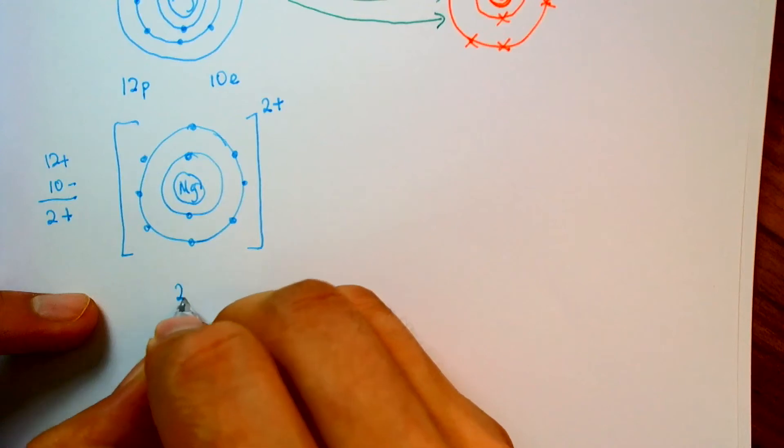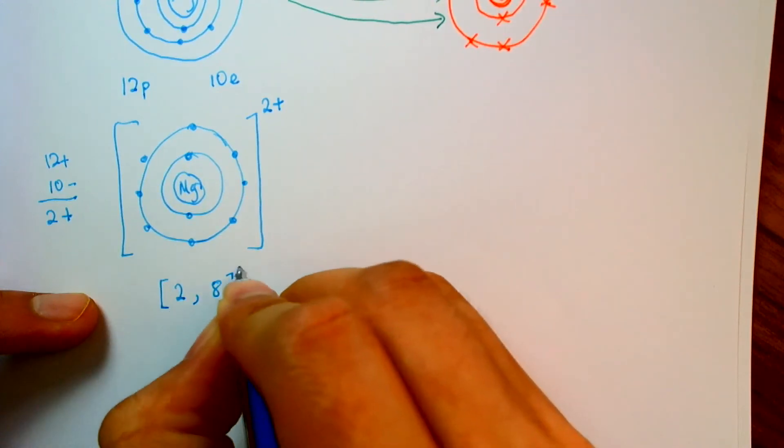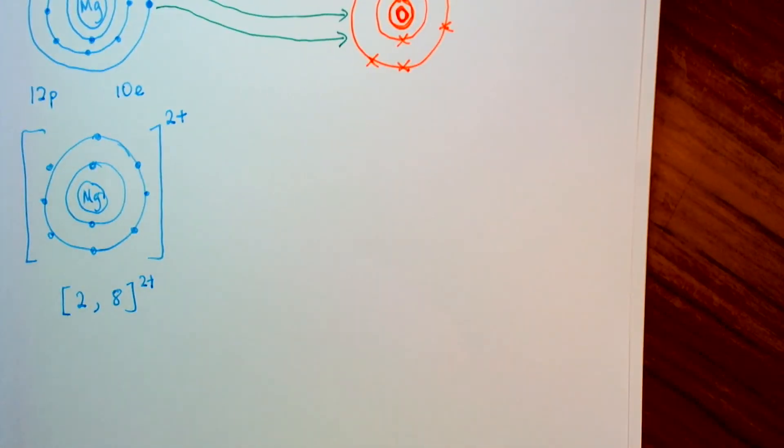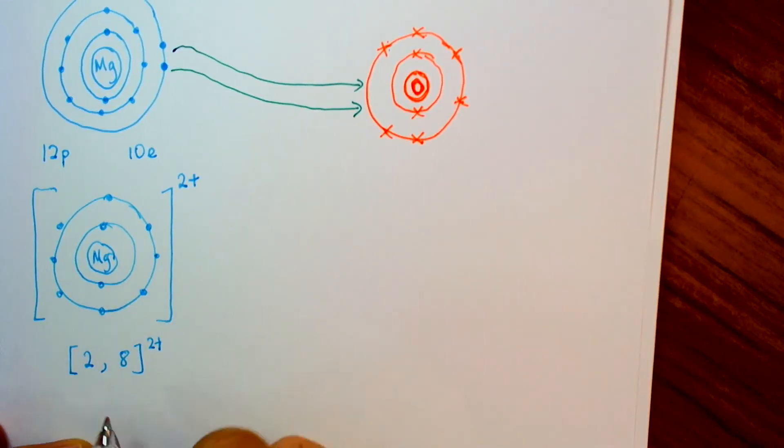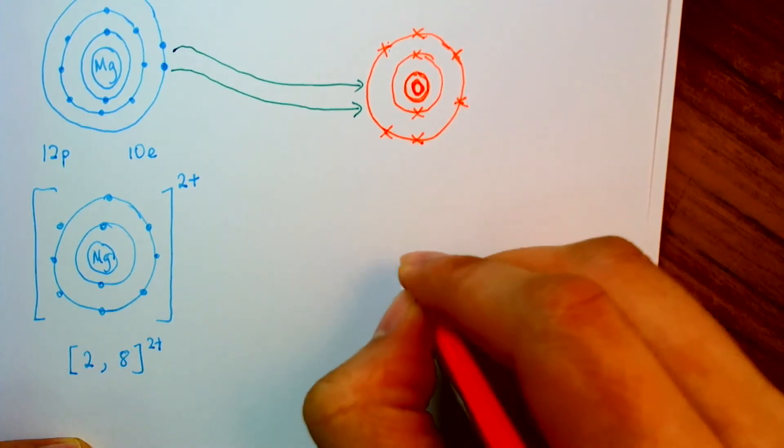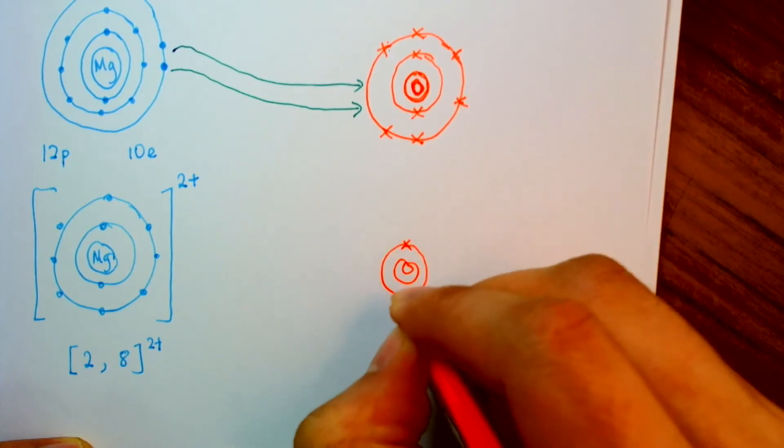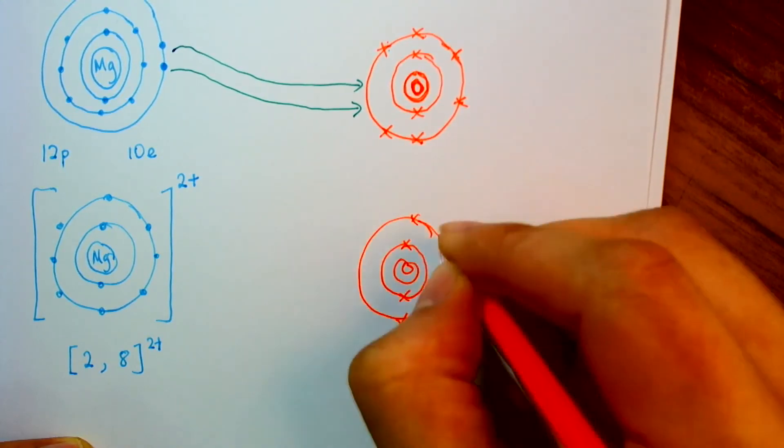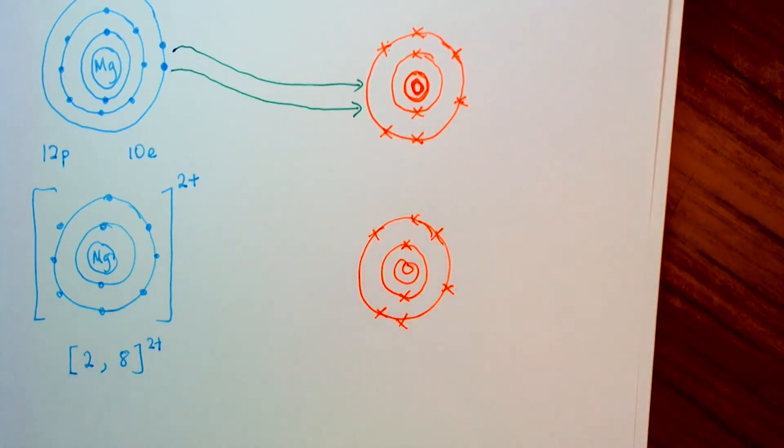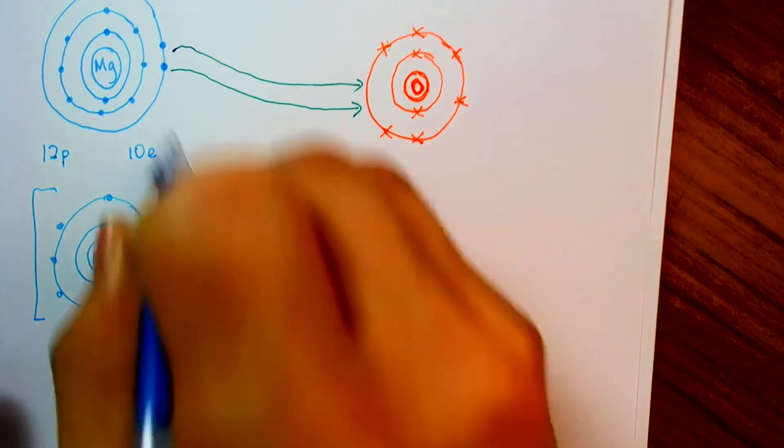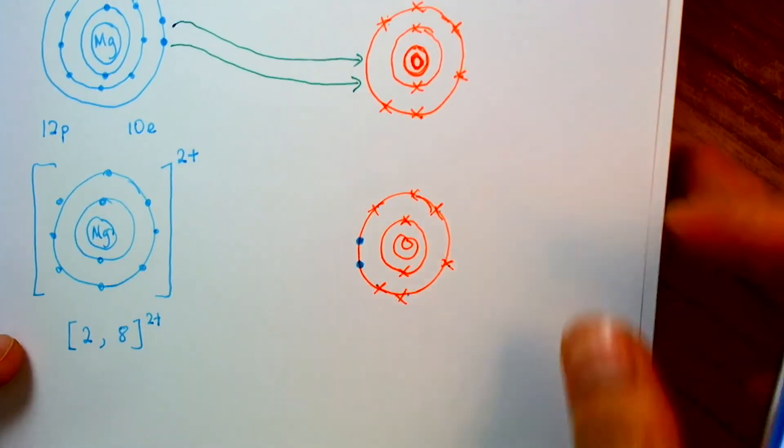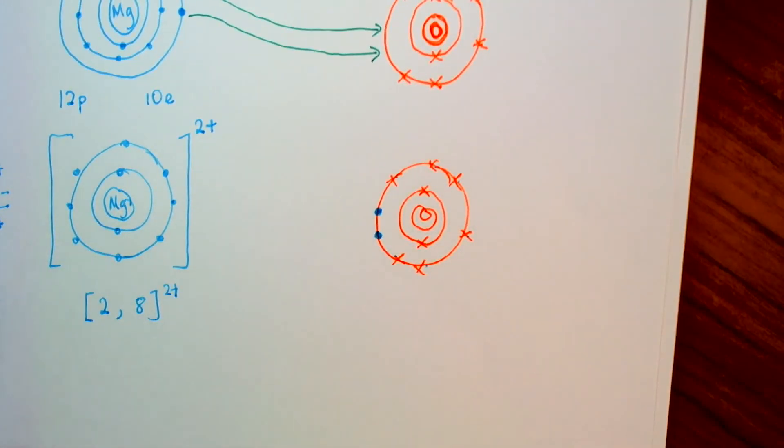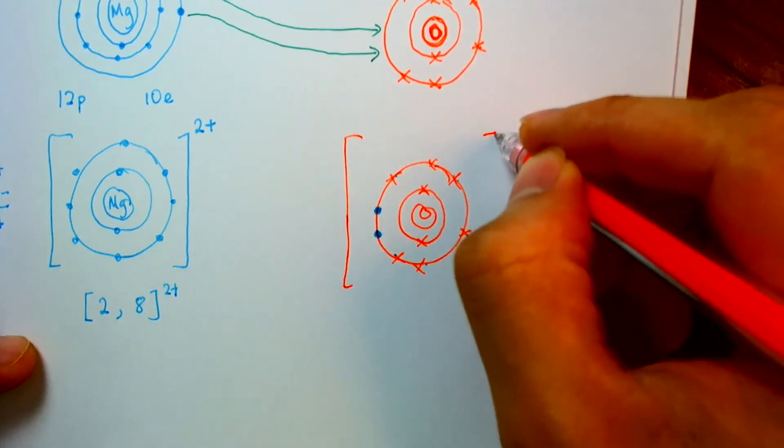And we will write its configuration 2, 8 brackets, 2 plus, since it's got a 2 plus charge on it. Meanwhile, oxygen. So I should emphasize that magnesium is now happy because it's got a full outer shell of 8 electrons. Meanwhile, oxygen, 2, 6, 2, 3, 4, 5, 6, had gained the 2 electrons from magnesium. And magnesium had given it 2 electrons. So now we count electrons, 1, 2, 3, 4, 5, 6, 7, 8. Oh, look. Oxygen also has a full outer shell.